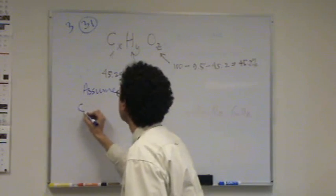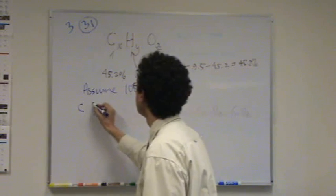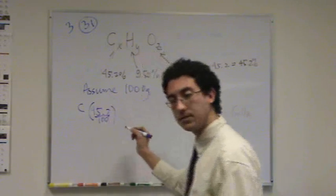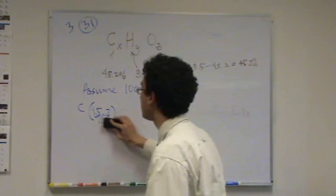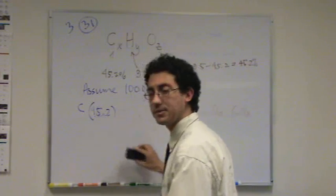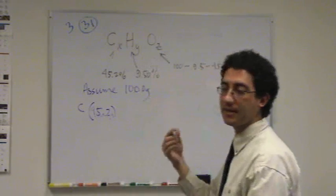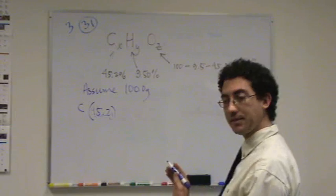So let's try carbon first. Carbon is 45.2. That's percent, so I'm going to divide by 100 to... oh no. Actually, I said it was grams. I'm just assuming that many grams. So this is actually grams of carbon right here. It was percent, and I said, let's just make it grams. You can do it anytime you've got percent.